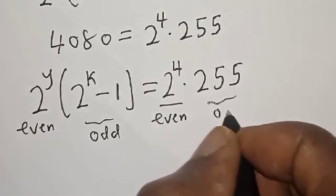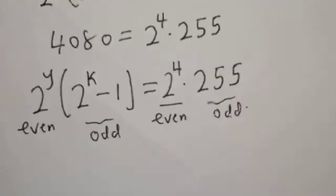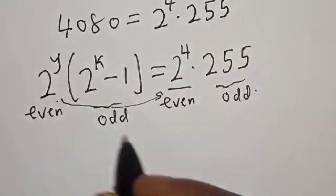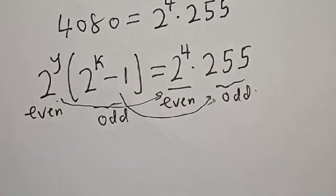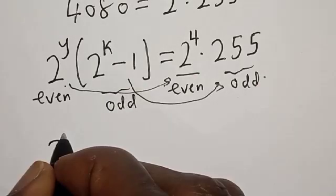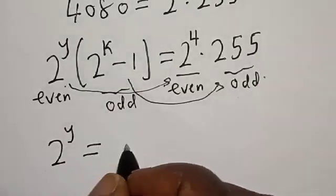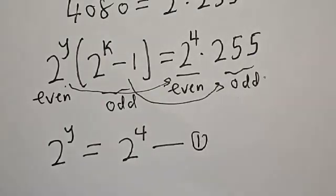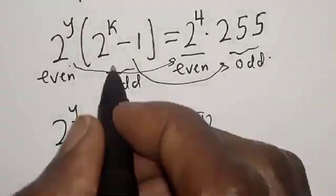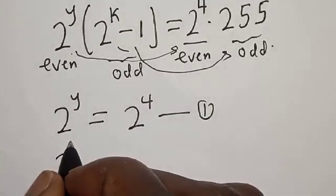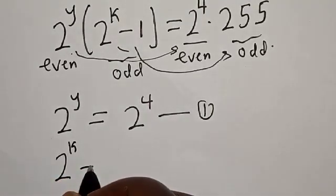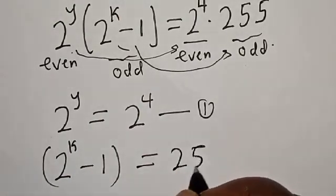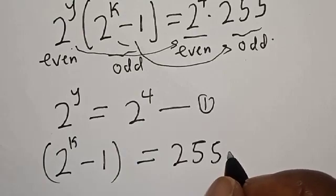If we look at this, 2 raised to power 4 is even and 255 is odd. By comparing, 2 raised to power y is equal to 2 raised to power 4 — let's call this equation 1. And 2 raised to power k minus 1 is equal to 255 — let's call this equation 2.